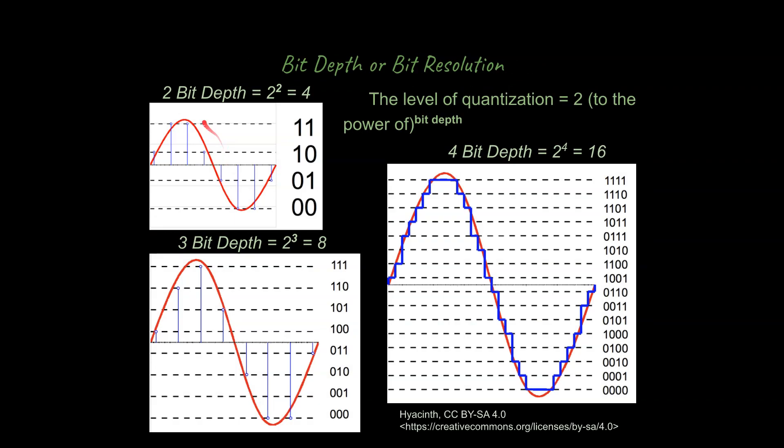So first of all, if you have a two-bit depth, so that's what we mean by bit depth. We are working with two bits of information, and there are four logical options that this can have. And so because we're dealing with binary information, each bit has two possible states.